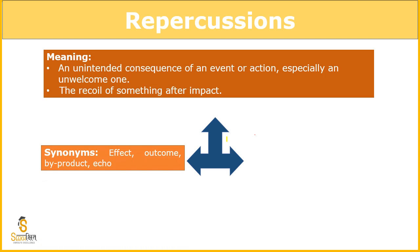So its synonyms are: effect, outcome, by-product. By-product means any thing that comes alongside as an extra product — like if I'm making paneer from milk, then the whey that remains, that's a by-product. That is not the main product, it came along — that's an excretory product, that's a by-product.